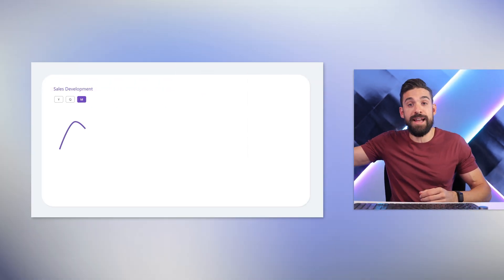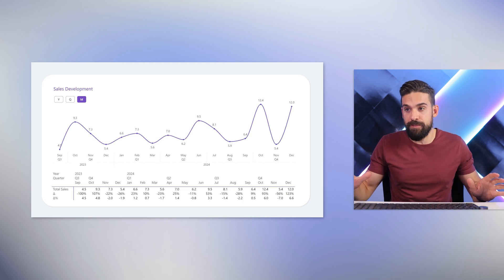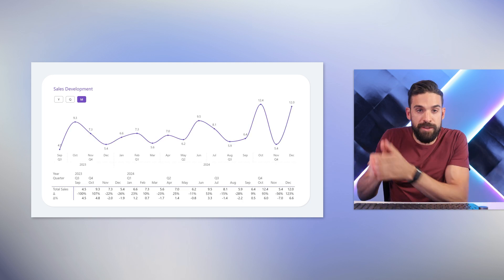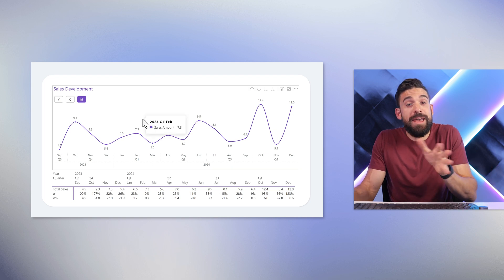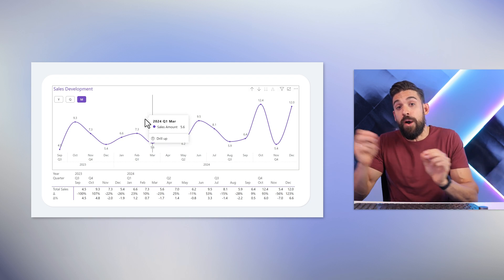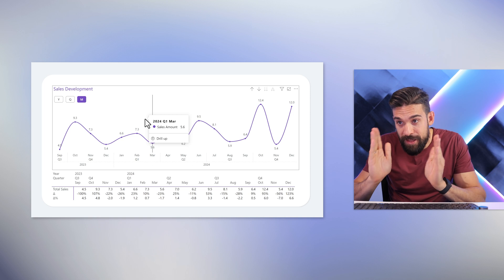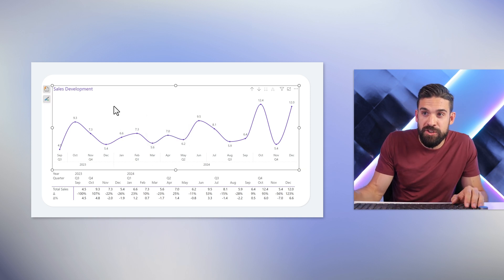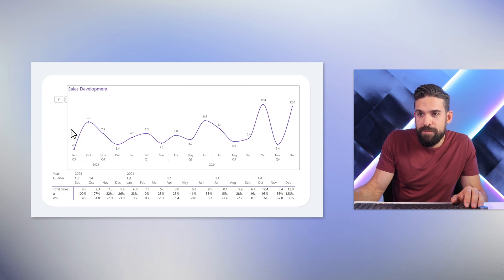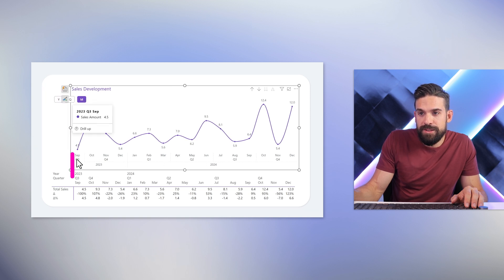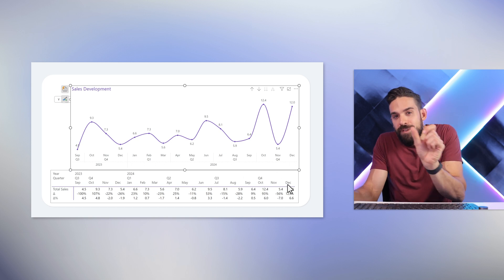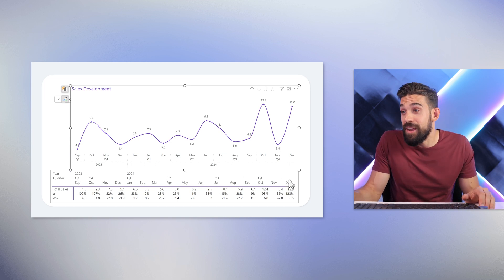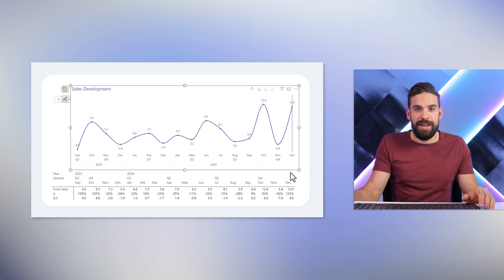One approach is to create a matrix visual below the main chart — a line chart on top and a matrix visual at the bottom. Initially nothing lines up perfectly, but you can start adjusting the width of the line chart and the column widths to get everything aligned. For example, adjusting the line chart width so September 23 starts at the same point, then tweaking column widths until it almost perfectly lines up.